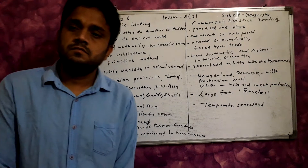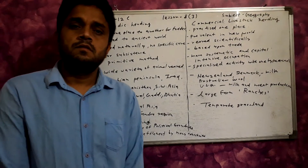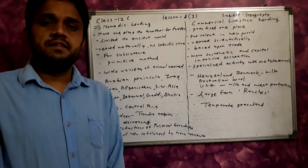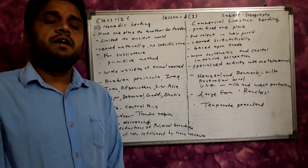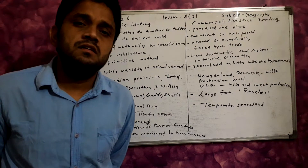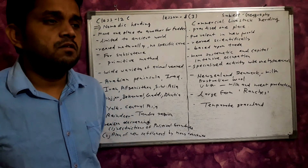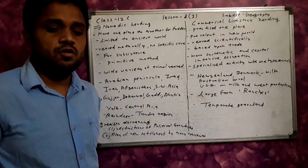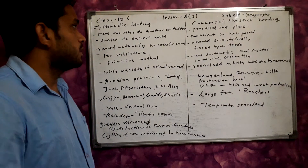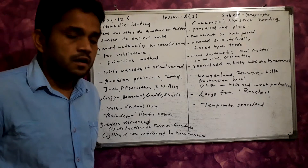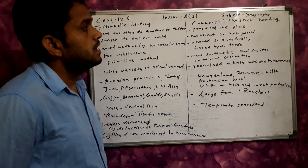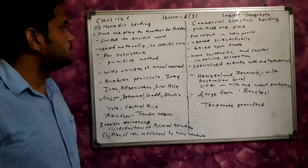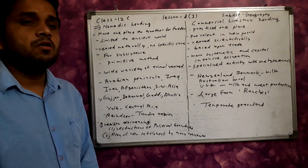Good morning students. In the last class we discussed about animal husbandry. We can classify animal husbandry into two types: nomadic herding and commercial livestock herding. First of all, we will discuss about nomadic herding.